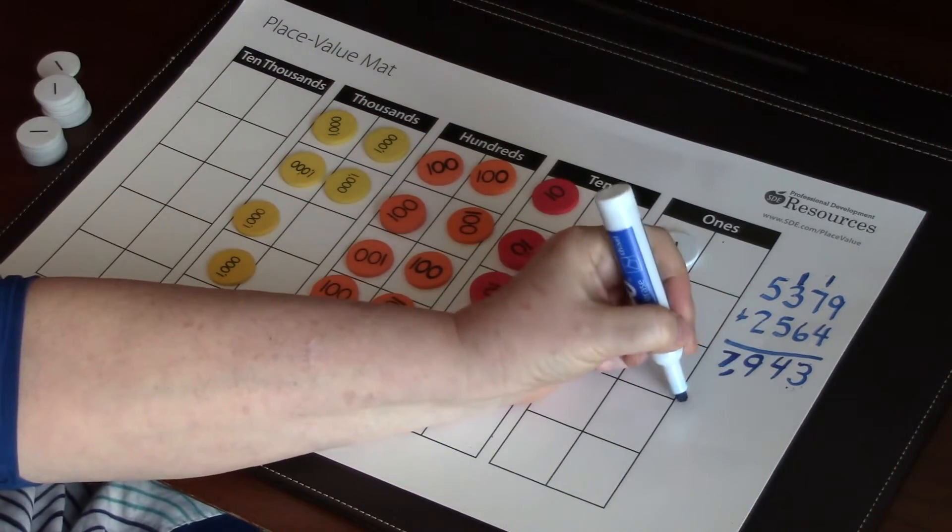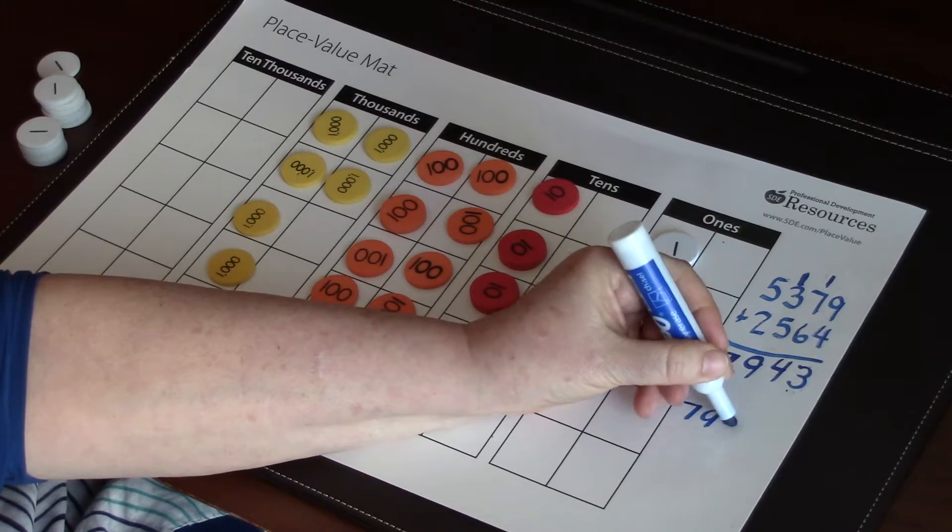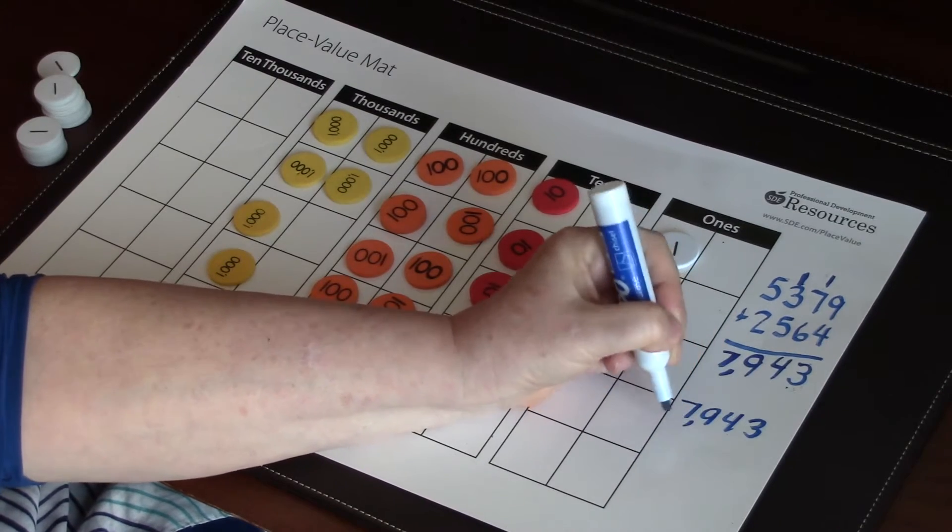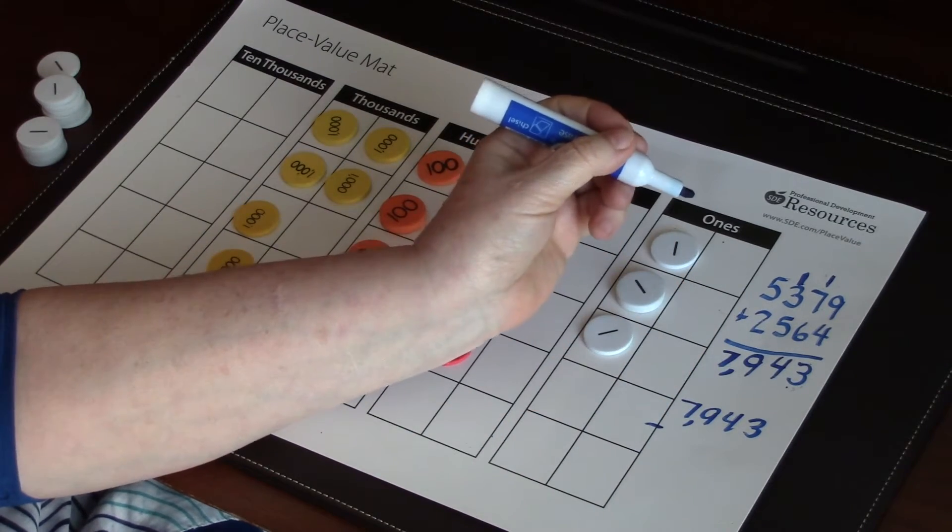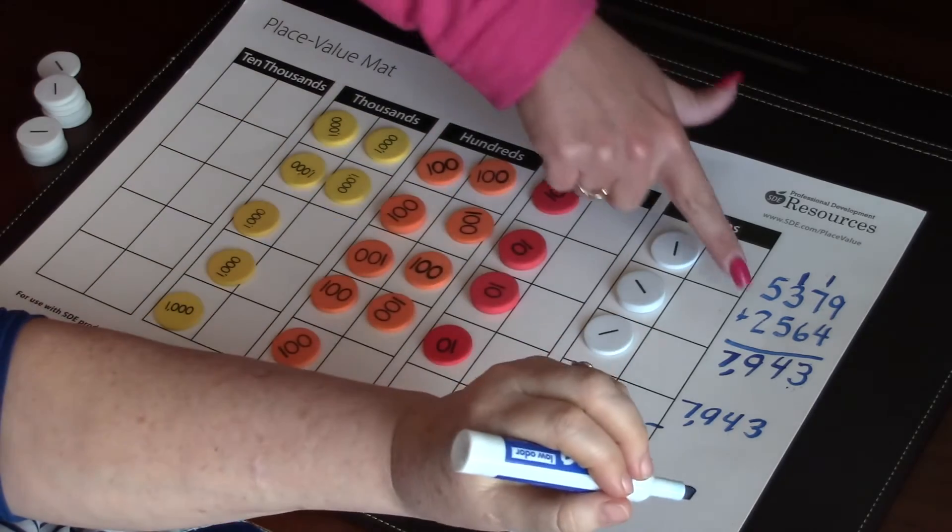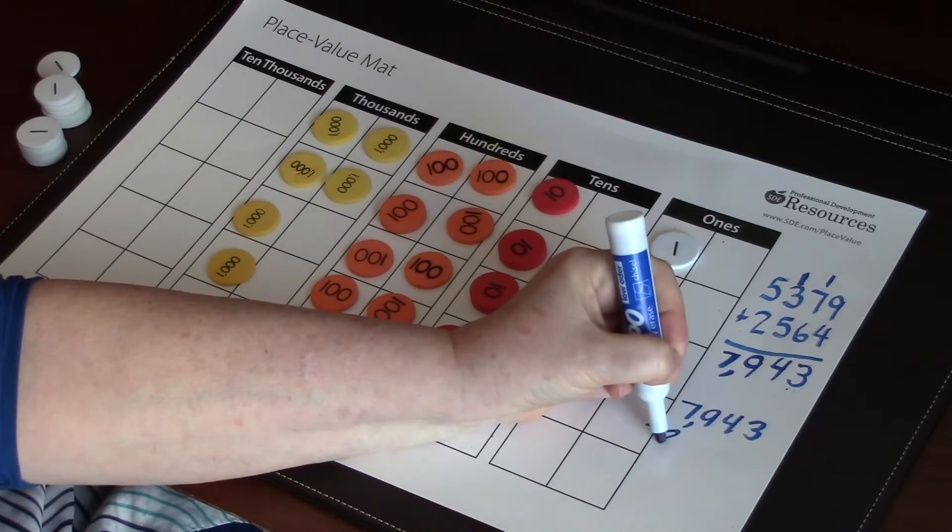So we're going to start with 7,943, and we're going to subtract a what? A part. So we're going to subtract this part, 2,564.